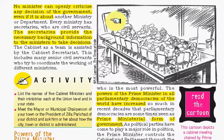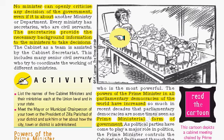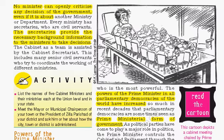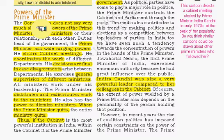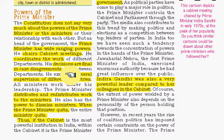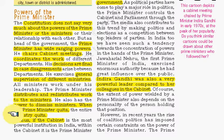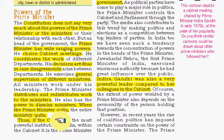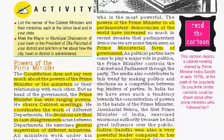A picture of former Prime Minister Indira Gandhi illustrates that within the Council of Ministers, the prime minister holds the most power. The constitution does not set the powers of the prime minister in detail, but the prime minister has a wide range of powers: he chairs cabinet meetings, coordinates the work of different departments, makes final decisions in case of disagreements, and exercises general supervision of different ministries. The prime minister also distributes and redistributes work to ministers and has the power to dismiss any minister. If a prime minister quits, the entire ministry has to quit — which is why Indira Gandhi was shown slightly bigger than other ministers in that picture.